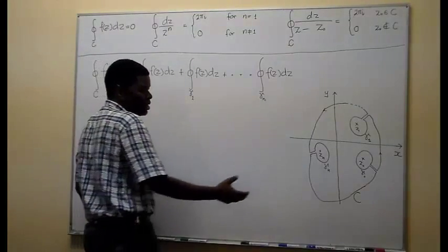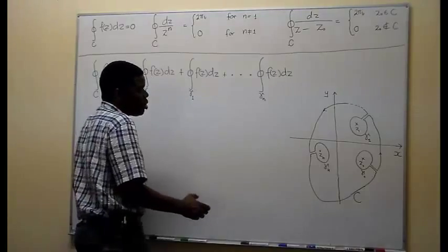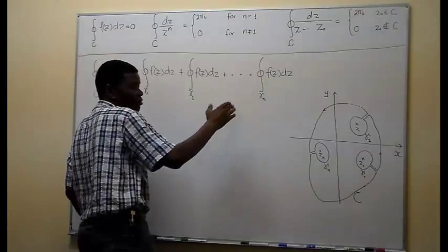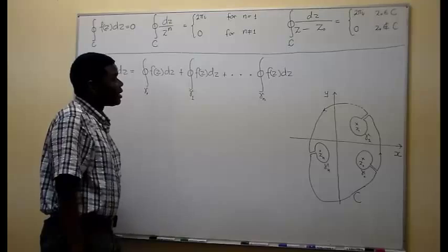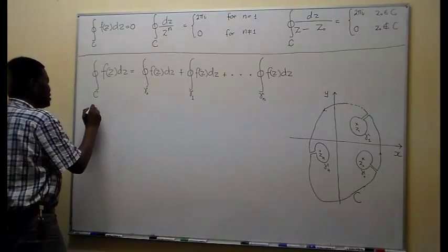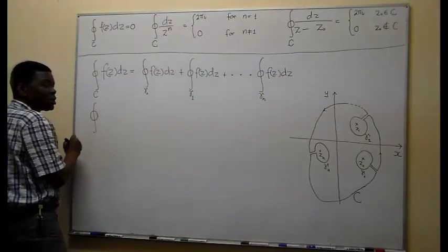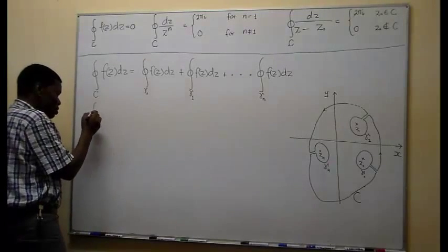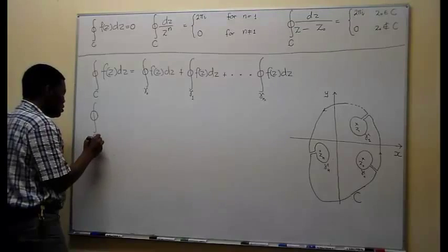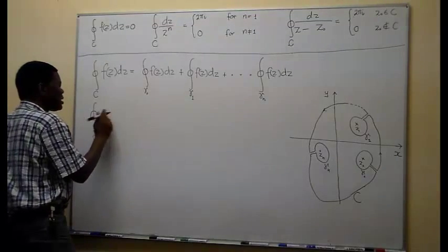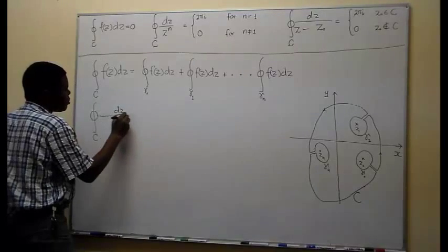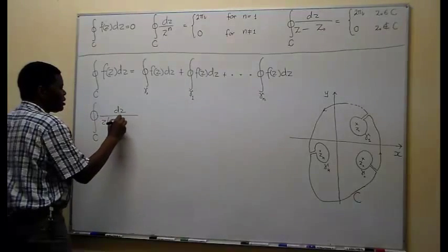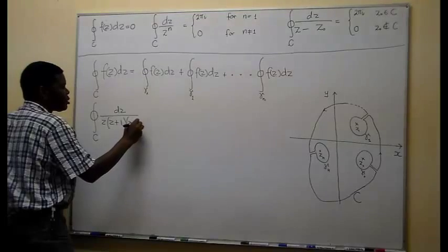Now I want to look at an example which presents exactly this situation. We are integrating — and I hope you notice my drawing here is anti-clockwise, meaning the integration has positive orientation. So we are integrating f(z) dz, where f(z) is given below.